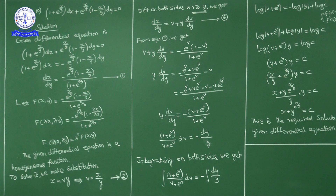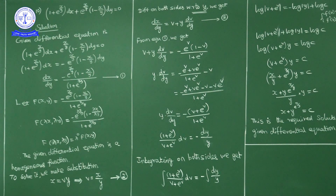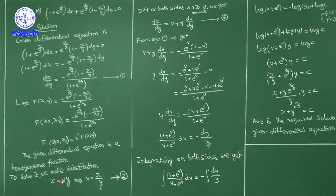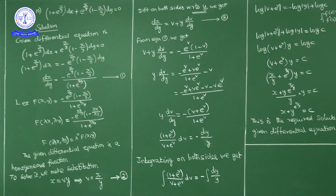Separating variables: (1 plus e^v) upon (v plus e^v) dv equals minus (1/y) dy. Variable separation is complete — all v terms and dv on one side, all y terms and dy on the other. In general, when the equation is of y/x form we use y equals vx; when it is of x/y form we use x equals vy.